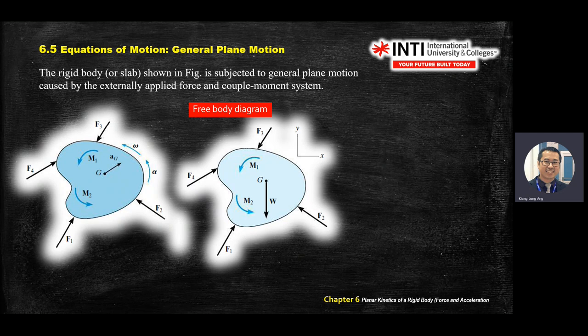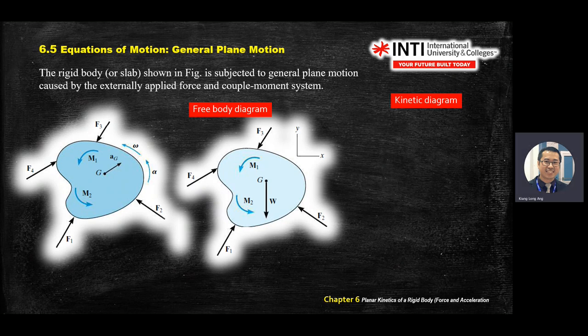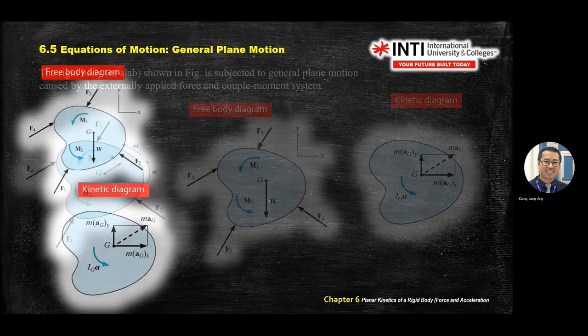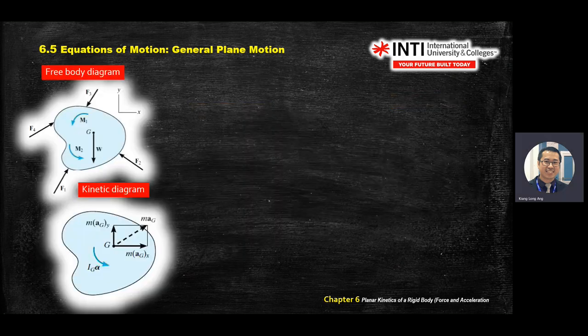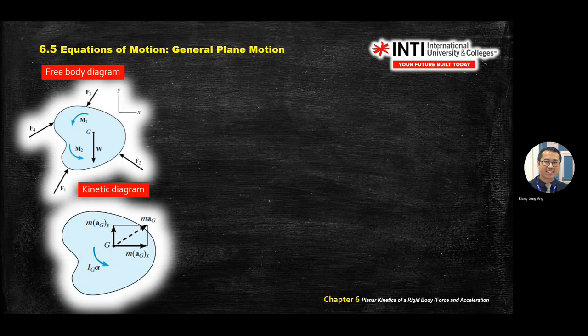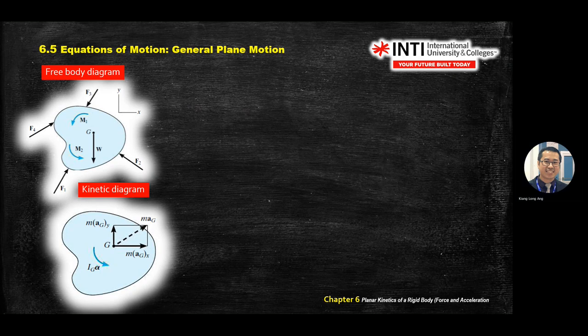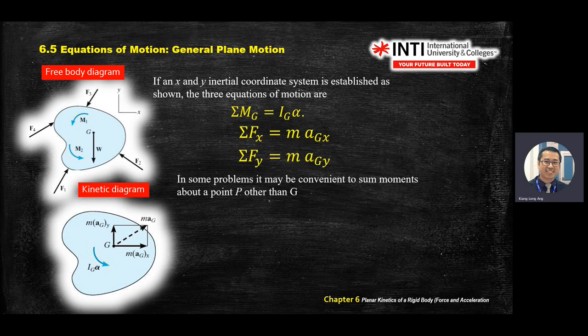The rest is general plane motion. General plane motion means you have rotation and translation combined together. Still the same: free-body diagram has all the forces with the effect of gravity; kinetic diagram looks at the second moment of inertia I_G times alpha, plus gravitational mass and acceleration. You are still applying M_G equals I_G times alpha and F equals MA.